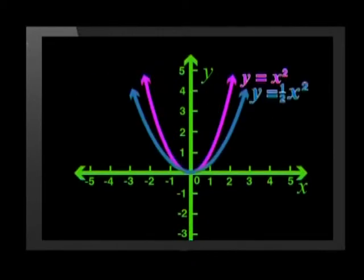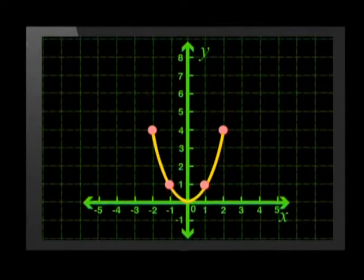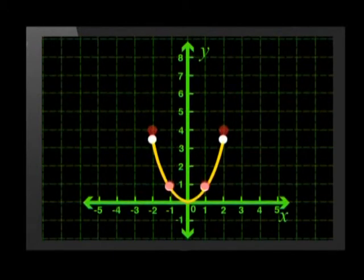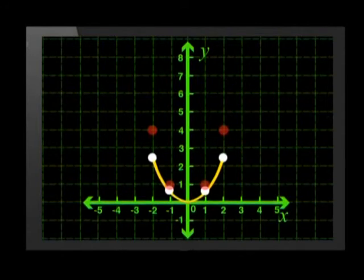When the A value in the formula is a half, the new graph is fatter or wider than the parent graph. The parent graph has moved down closer to the x-axis. The arms are spread wider on this graph.